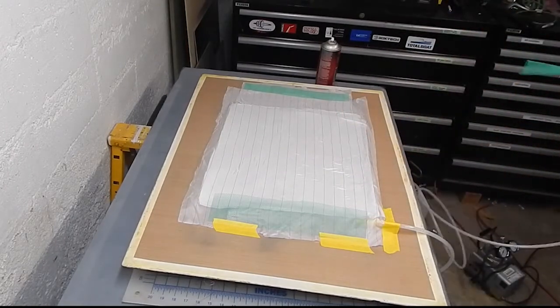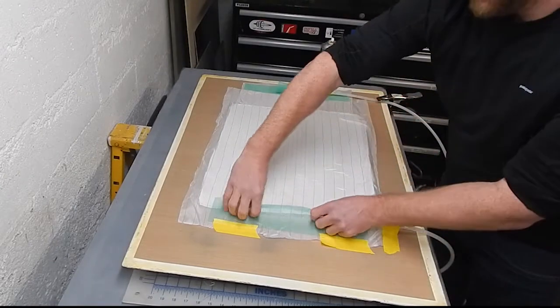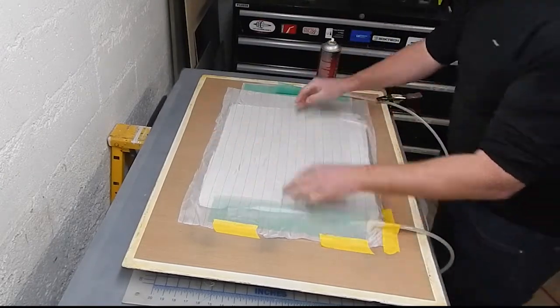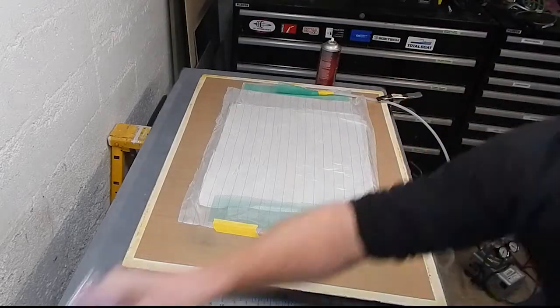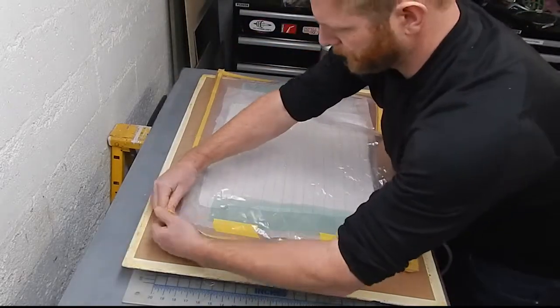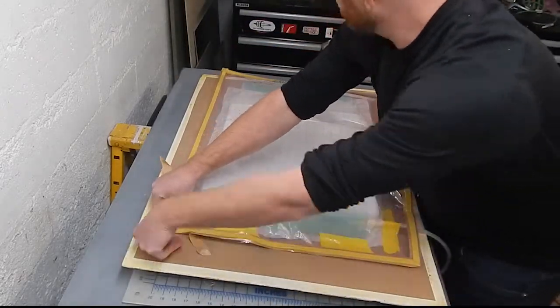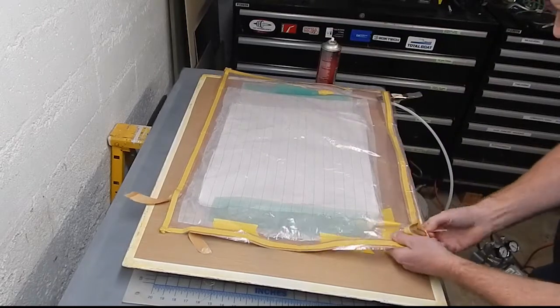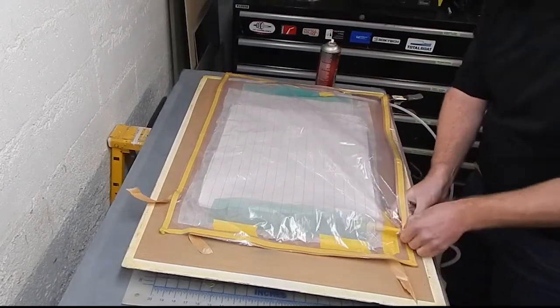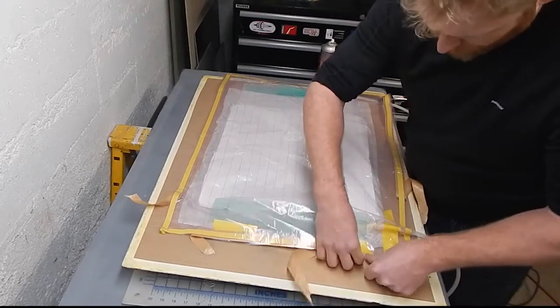You want peel ply over the top of spiral wrap so that it doesn't damage the bag. If you have just spiral wrap underneath the bag you can have problems with the bag getting pushed into the spiral wrap. I've got the outflow vacuum side on the far end, that's just a little tail made of flow media wrapped around the tube. In this case that should be fine.